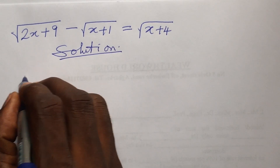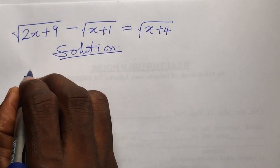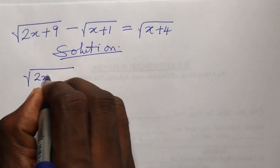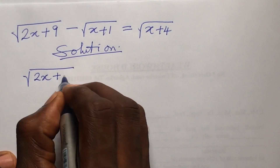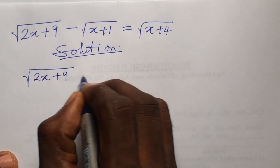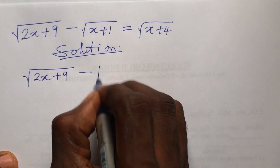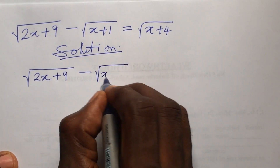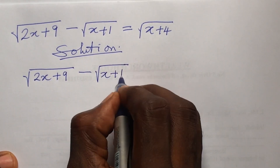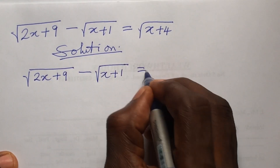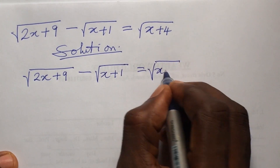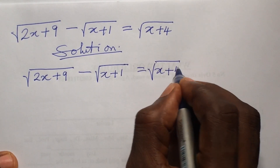The question reads: the square root of (2x plus 9) minus the square root of (x plus 1) equals the square root of (x plus 4).